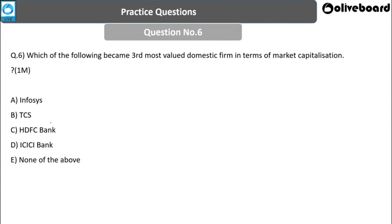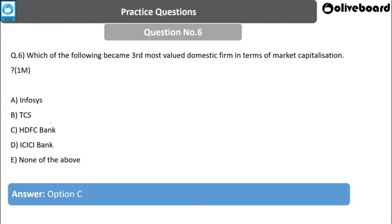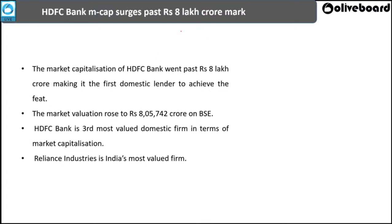Next question: Which company became the third most valued domestic firm in terms of market capitalization? Options: Infosys, TCS, HDFC Bank, ICICI, or None of the above. The answer is HDFC Bank. After Reliance Industries and TCS, HDFC Bank has become the third most valued domestic firm by market capitalization.